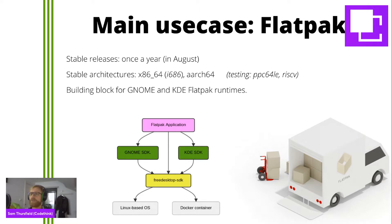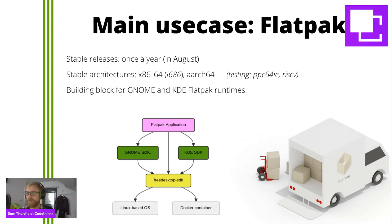A lot of apps don't use the Free Desktop SDK directly. They will use one of the SDKs that's built on top of it, such as the GNOME SDK or the KDE SDK. Imagine a stack: at the bottom, the Free Desktop SDK is an image containing low-level tools everybody needs, such as a compiler and various shared libraries. Then the GNOME SDK has that plus all of the standard GNOME libraries, and the KDE SDK similarly.